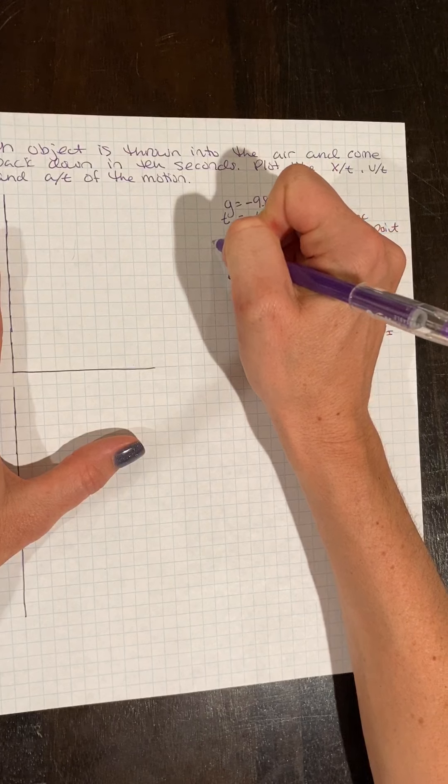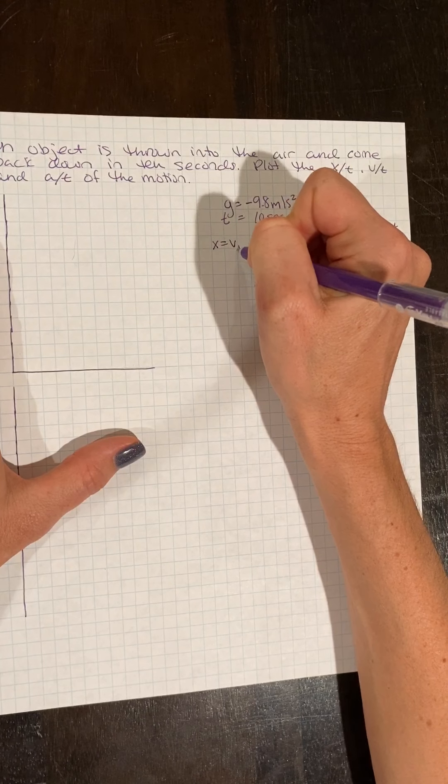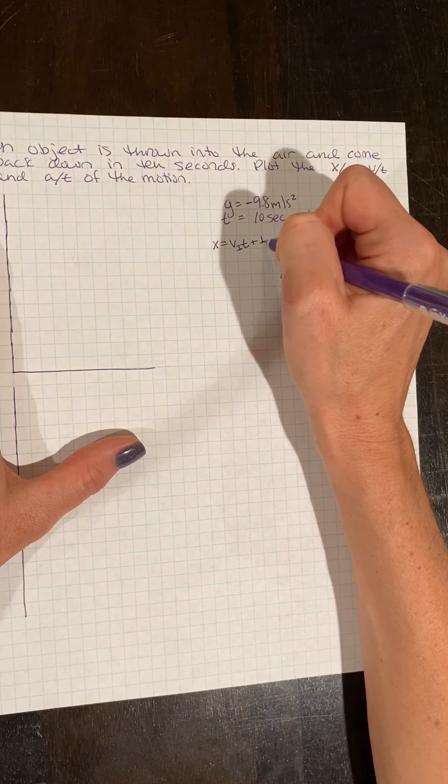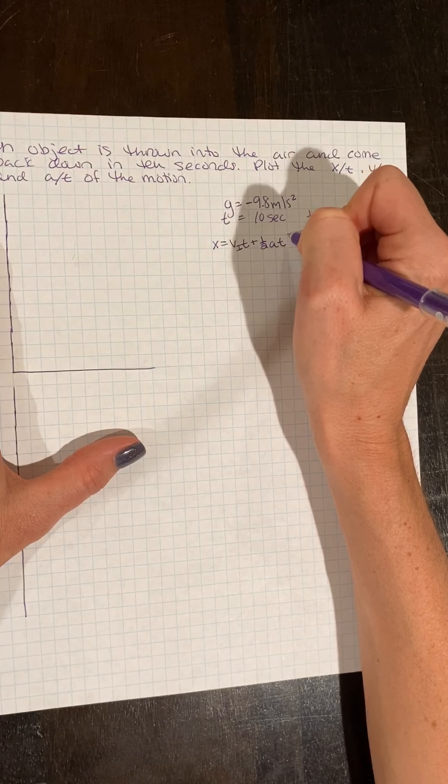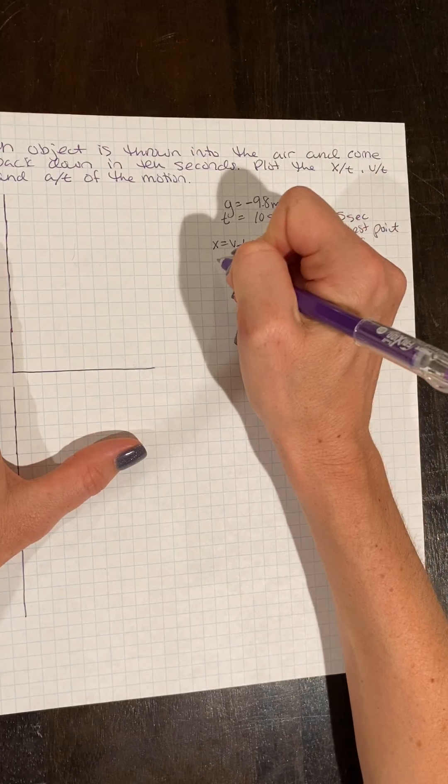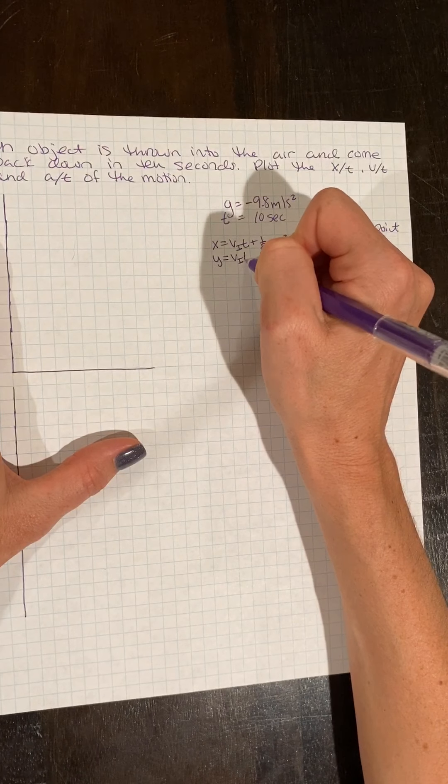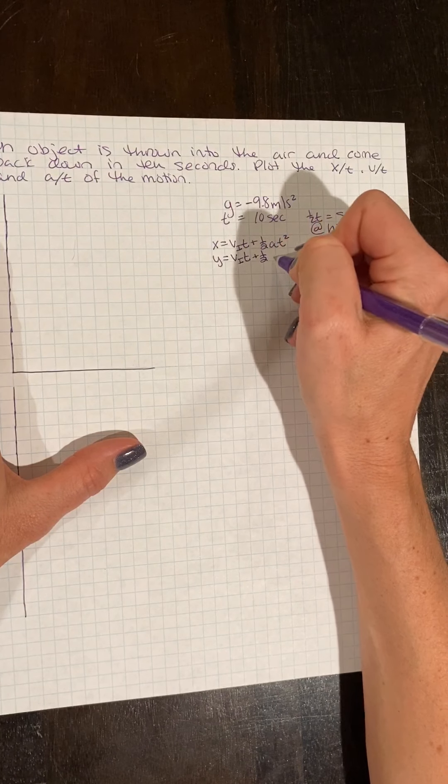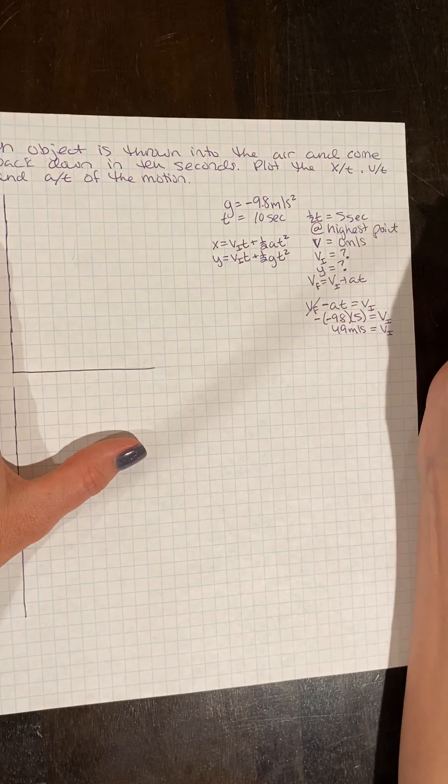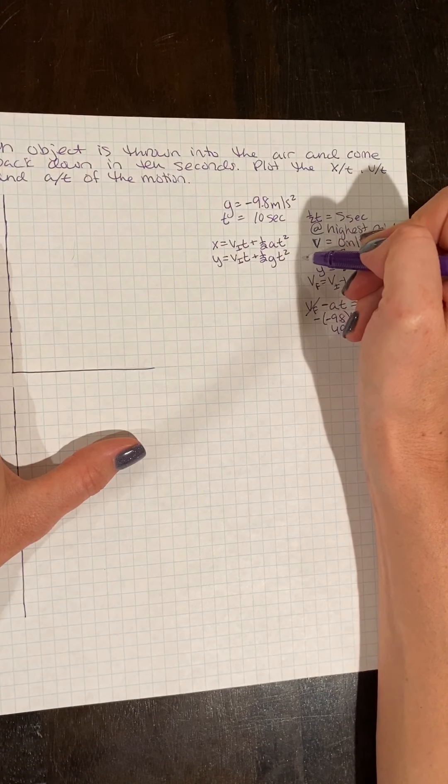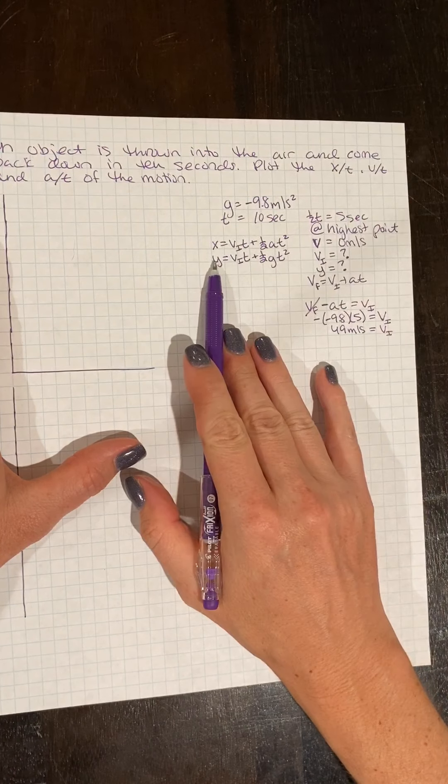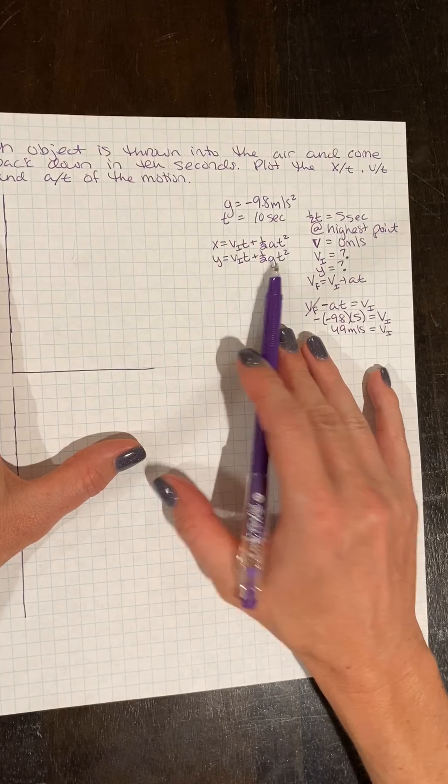So I'm going to use this equation, our second kinematic. All right, I'm going to use our variables for the vertical. But these are the same equations, right? These are just specific, our displacement in the vertical, and our acceleration due to gravity.